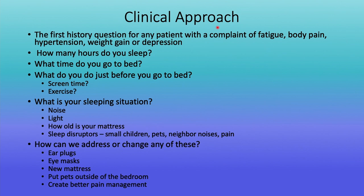As a clinician, what do you do with this? The first history question for any patient with a complaint of fatigue, body pain, hypertension, weight gain, depression, insulin resistance, elevated hemoglobin A1C, or HSCRP should be: how many hours do you sleep at night? What time do you go to bed? What time do you get up? What do you do just before bed — screen time, exercise, watch scary movies, read scary books? What might be jacking up your sympathetic and norepinephrine system? What's your sleeping situation — noise, too much light? How old is your mattress?